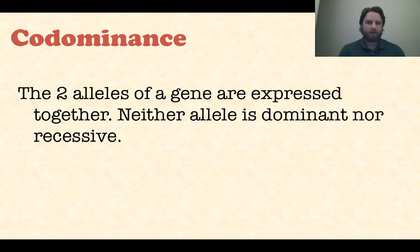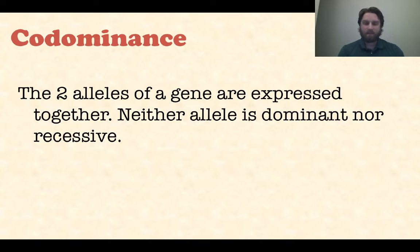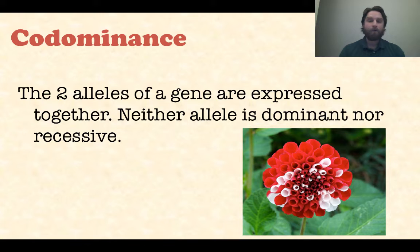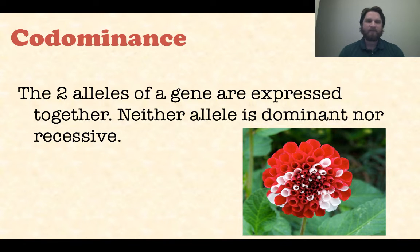So let's move on to co-dominance. Co-dominance, just like it sounds, is when two alleles of a gene are expressed together — co means together. Neither allele is dominant and neither is recessive; they are both expressed simultaneously. So if you have the red and white allele for the flower, instead of making pink, you see both red and white expressed — they don't mix together to make something new.